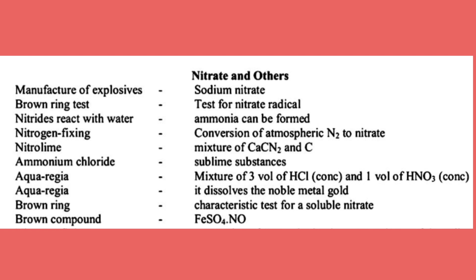The brown ring test is a characteristic test for nitrate ions (NO3-). The brown compound formed is FeSO4·NO. See you in the next lesson. Bye-bye.